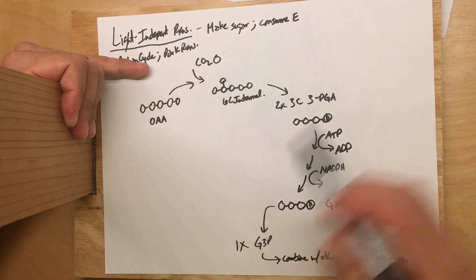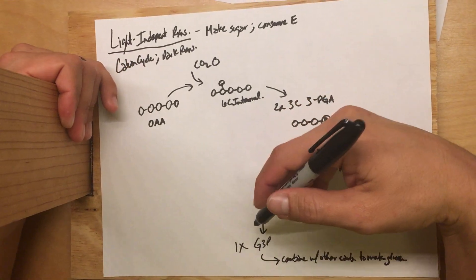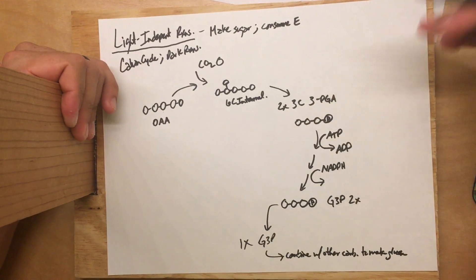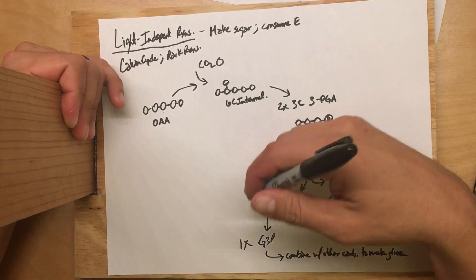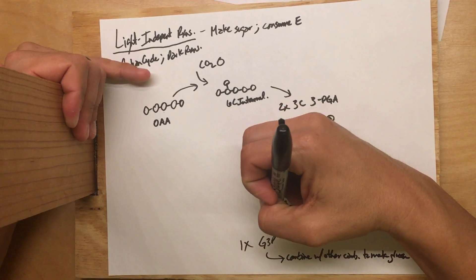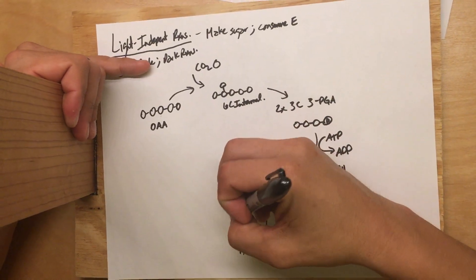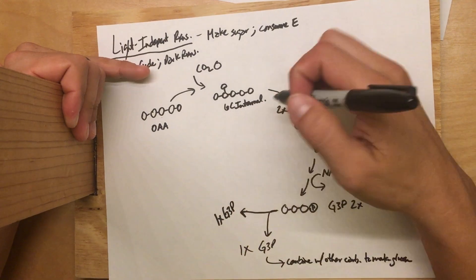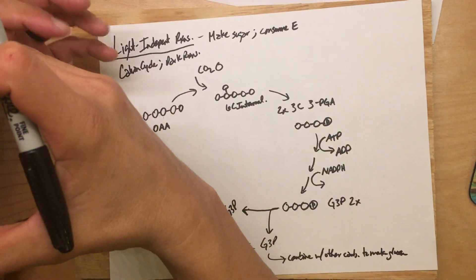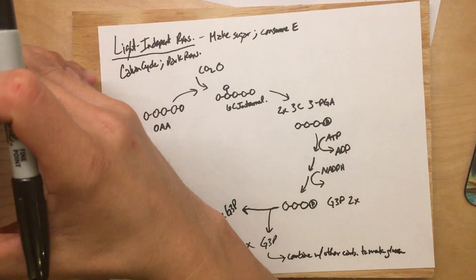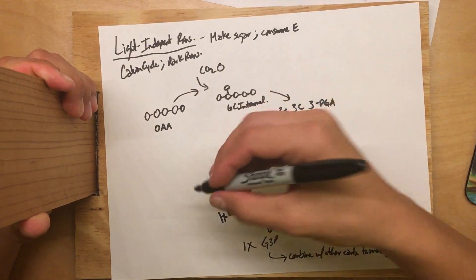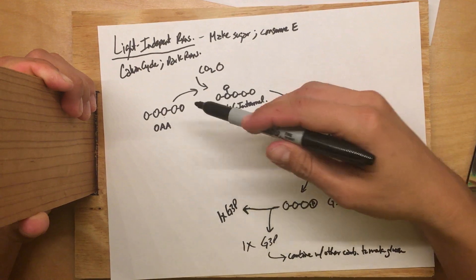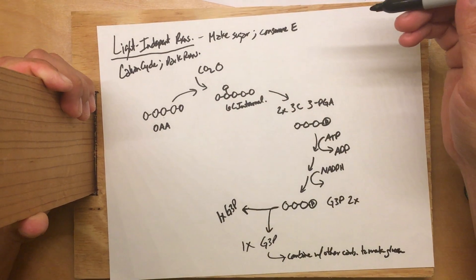The G3P that leaves is going to combine with other carbohydrates to make glucose or sucrose or some other sugar that might be needed by the cell. One of the G3Ps is going to stay behind so that we can get back to where we began. We can't just take everything and run, or we won't be able to do more than one cycle.